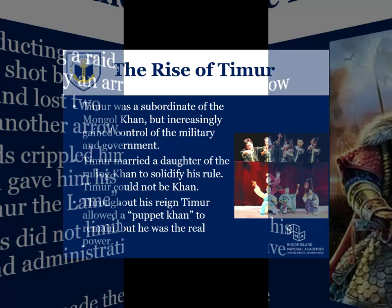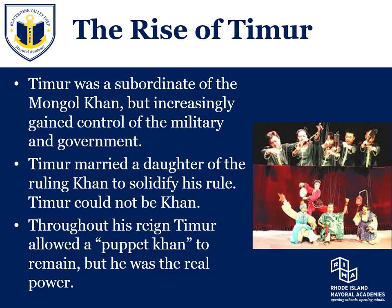So he's one of the most important administrators and military leaders within this Western Mongol Khanate. He is still technically a subordinate of the Mongol Khan — it is a Khanate, and it is a descendant of Genghis Khan who is in charge. But increasingly, it is Timur who is holding the real power. In a move to solidify his power base, he will marry one of the daughters of the ruling Khan, and therefore his children will be descendants of Genghis Khan as well.